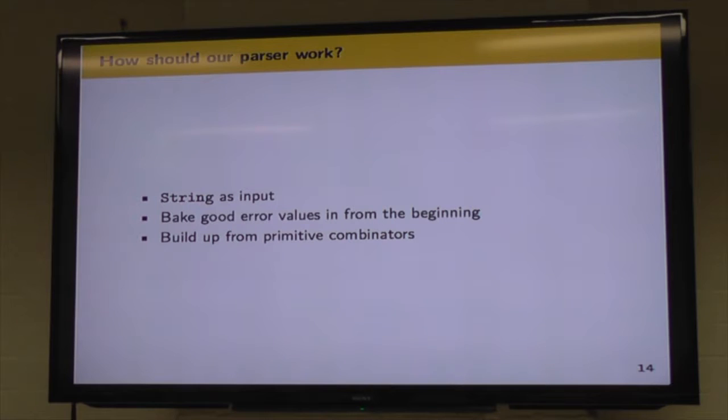And when we start getting into how parsers should work, the book lays out some simple design goals. So the first one is that we're going to be using strings as input. You can have parsers that take other types as input, but to keep things simple, we're working with strings. The second one is that we would like to bake in good error values from the beginning. So if you've ever worked with hideous C++ compiler errors, you know how nice it is to have good error values that point you in the right direction. And finally, we're going to build up from some primitive combinators. We start out with our small pieces and build on top of those.